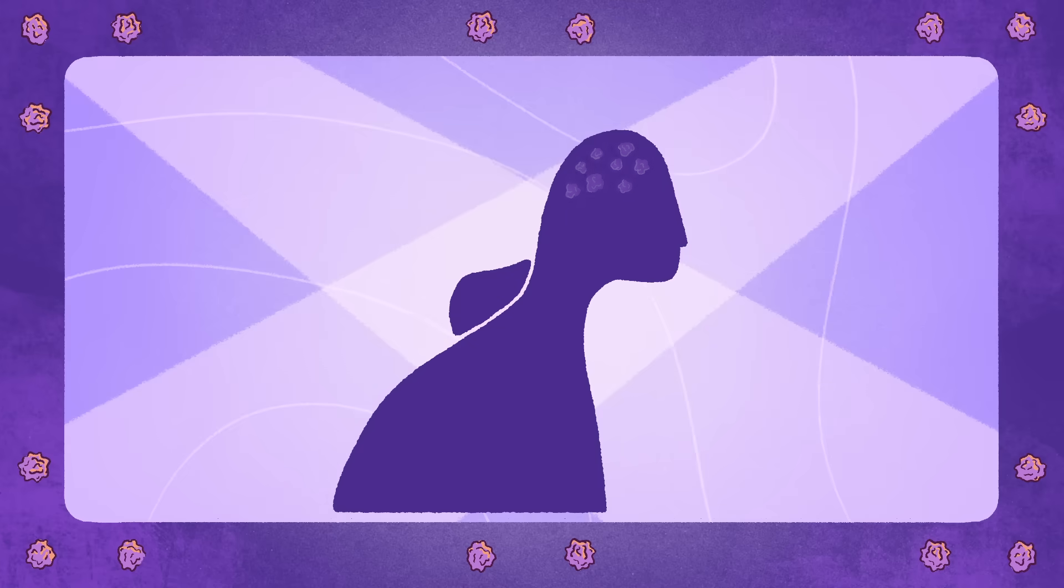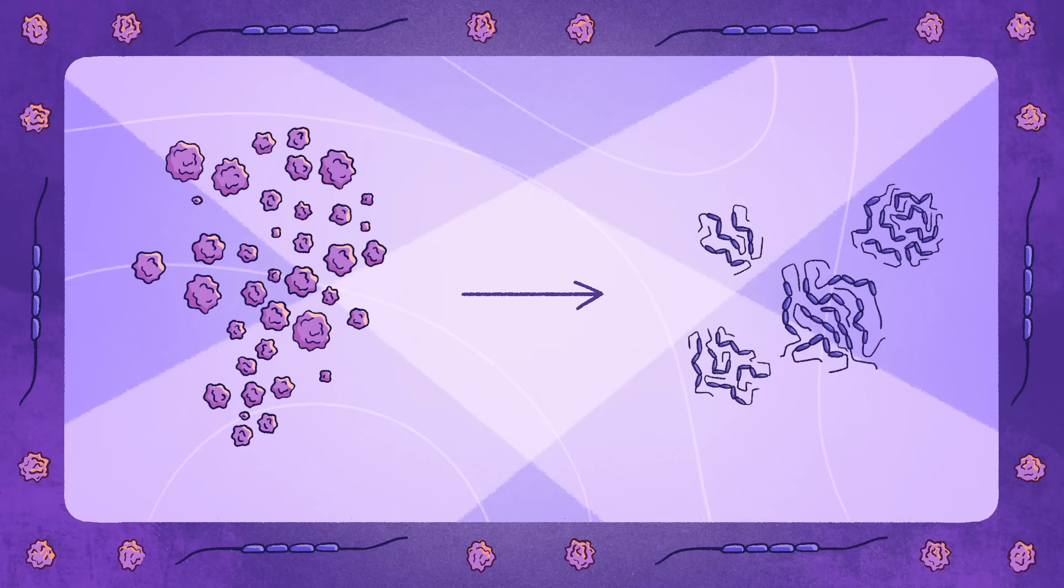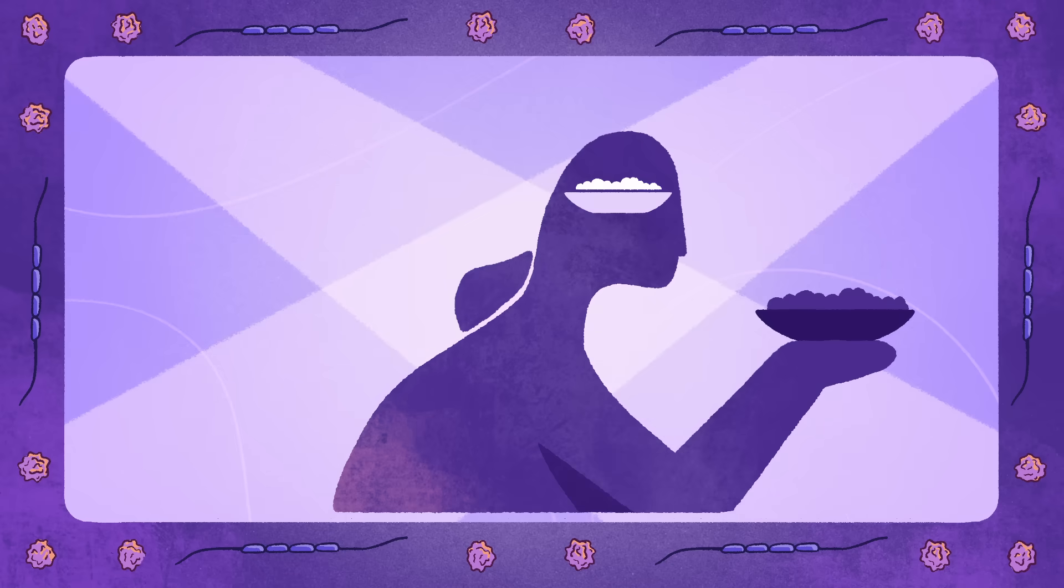In patients, plaques normally appear before tangles. Yet questions still remain. Do amyloid plaques trigger tau dysfunction? And why exactly do these abnormal proteins lead to such specific disease symptoms?